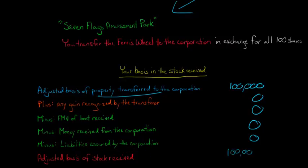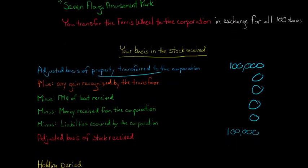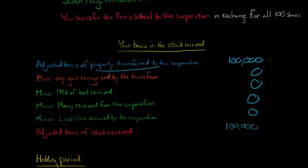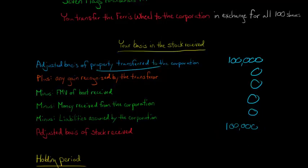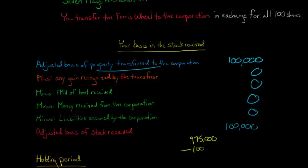Now we need to determine your holding period. Why does this matter? Let's pretend that immediately after this Section 351 transaction, you turn around and sell this stock for $975,000. That's your amount realized. You subtract your adjusted basis of $100,000, and that gives you a gain of $875,000.